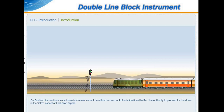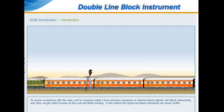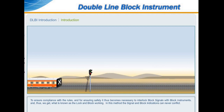The authority to proceed for the driver is the off aspect of the last stop signal. To ensure compliance with the rules and for ensuring safety, it becomes necessary to interlock block signals with block instruments, and thus we get what is known as lock-and-block working. In this method, the signal and block indications can never conflict.